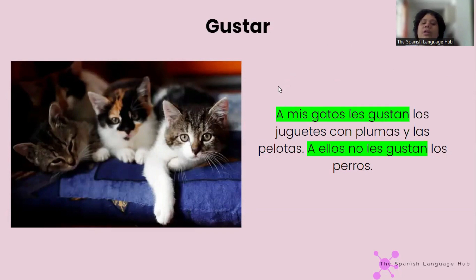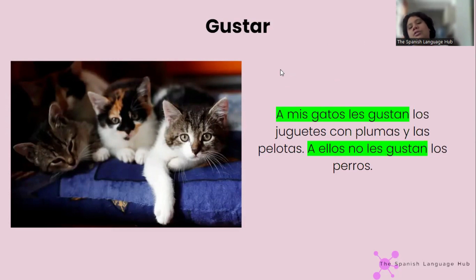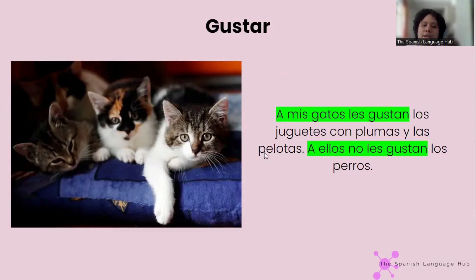If you want to mention someone's name — like a mi mamá, a papá — you need to start with 'a.' A mis gatos les gustan: my cats like toys with feathers and balls; they don't like dogs.